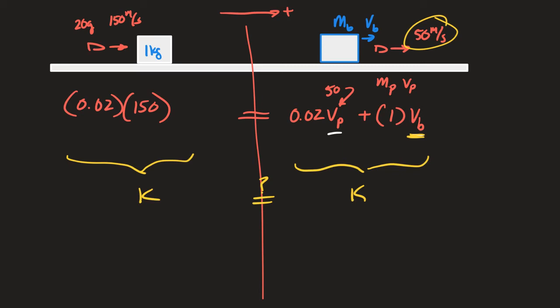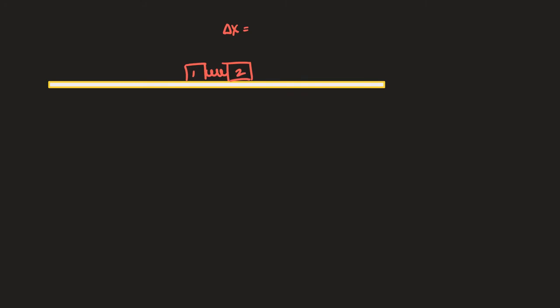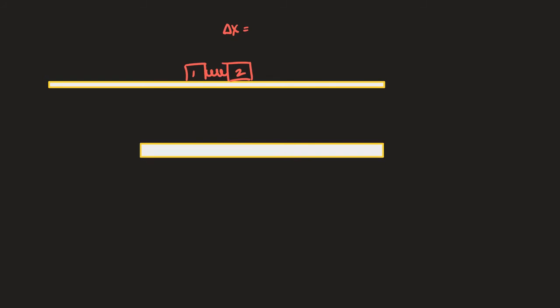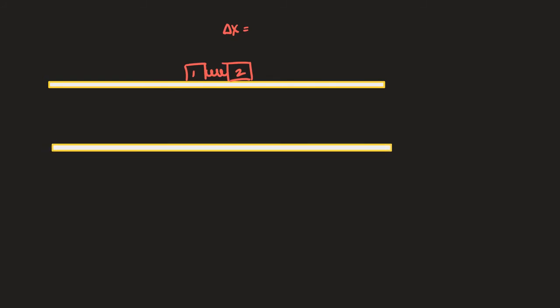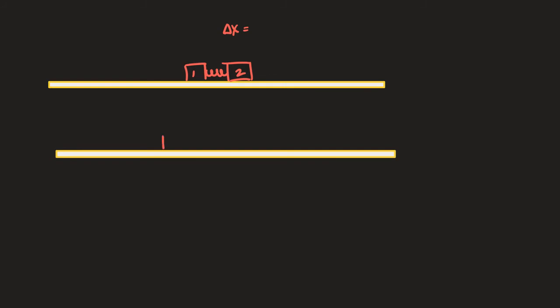That's how you tell whether a collision is elastic — by comparing the energy after the collision. The most likely way they will ask about elastic collisions on the exam is by asking you to demonstrate whether it is one or not, not having you solve for a predicted answer. After releasing a compressed spring between two boxes, both boxes are pushed apart — box one to the left, box two to the right, and the spring falls to the ground.